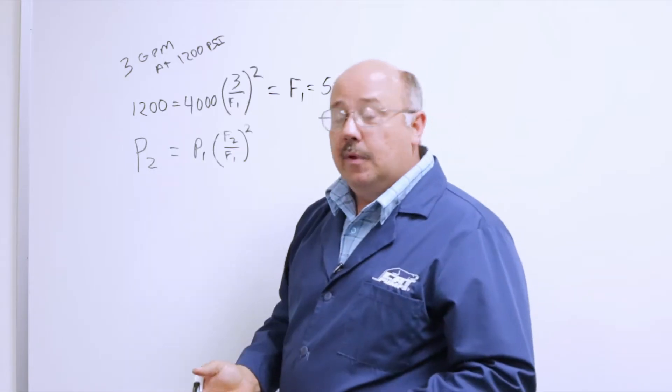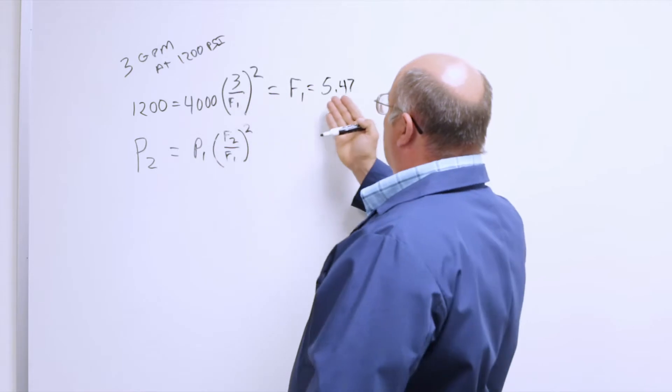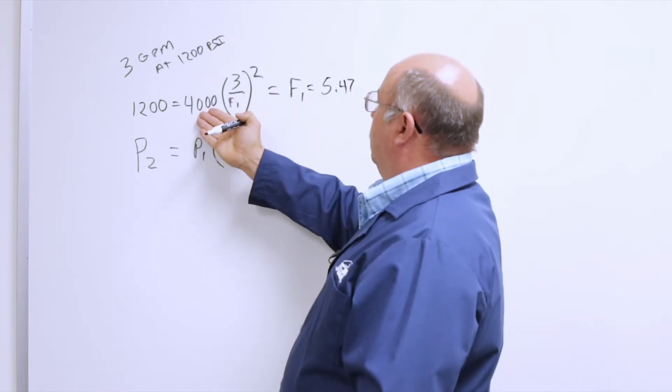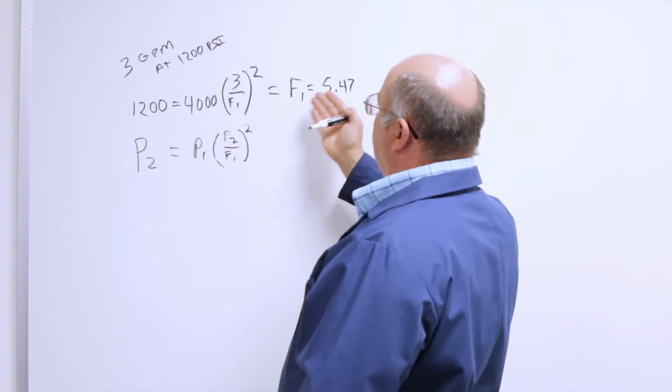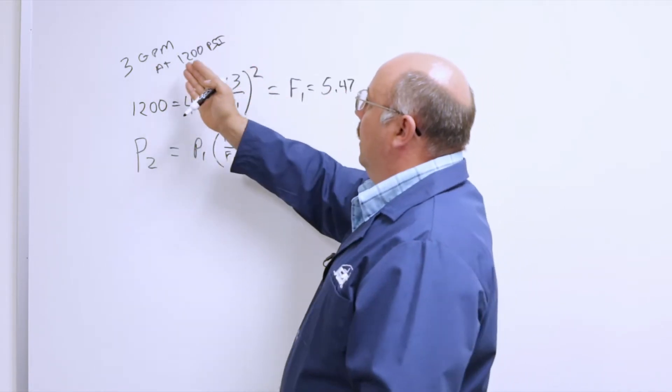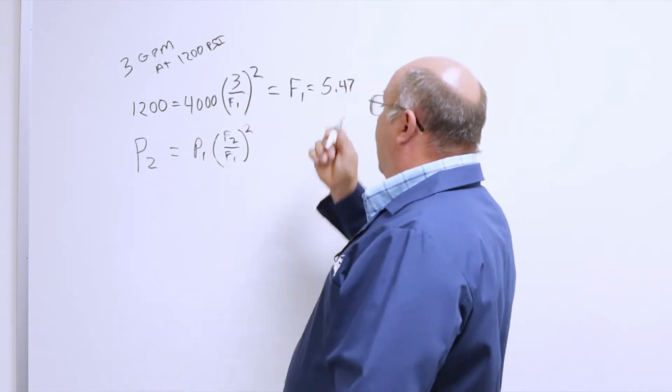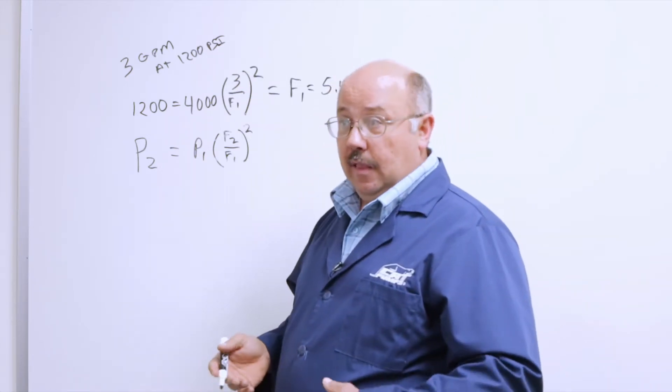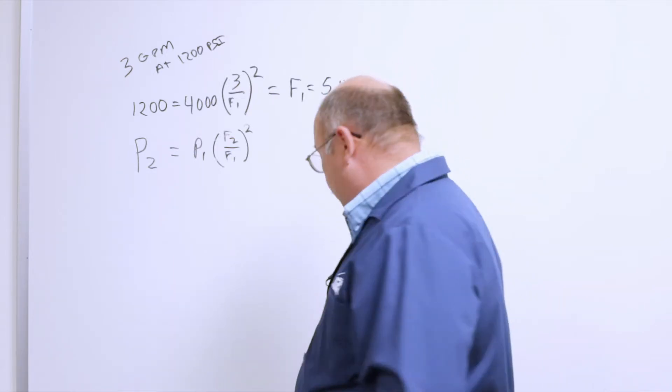Now you've got to throw some algebra at it, and we're not going to do all the algebra, but the final answer that we get from all that is F1 equals 5.47. So that number represents the flow through a nozzle at 4,000 psi, also represents the nozzle number, and this same nozzle would do 3 GPM at 1,200 psi. So we need a number 5.5 nozzle if we're not going to consider bypass flow.